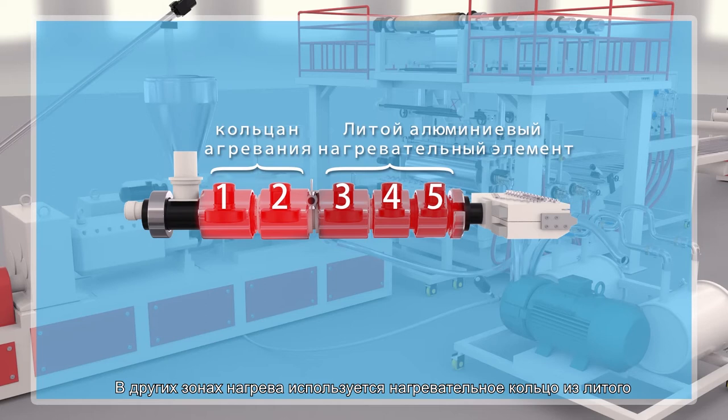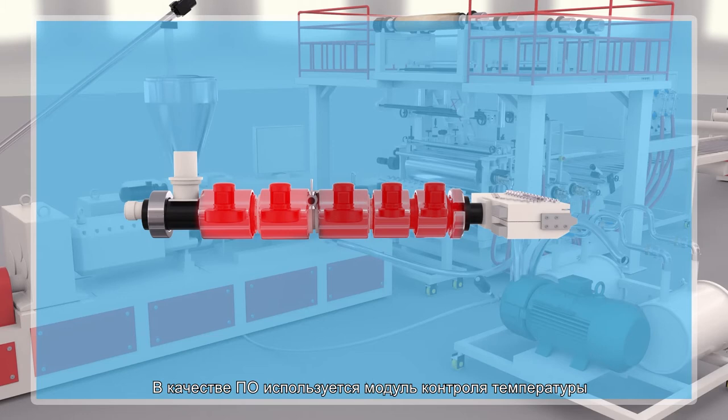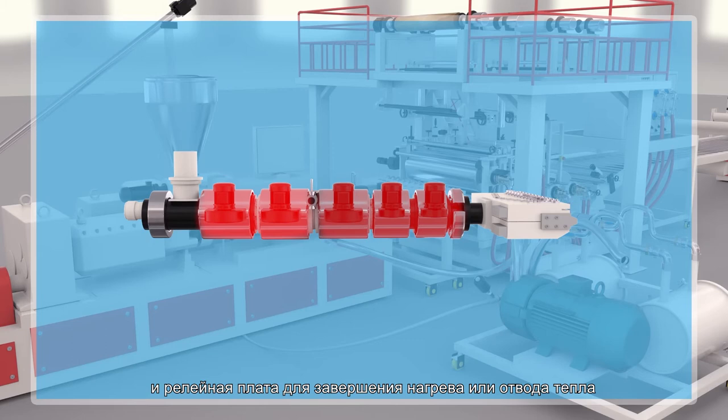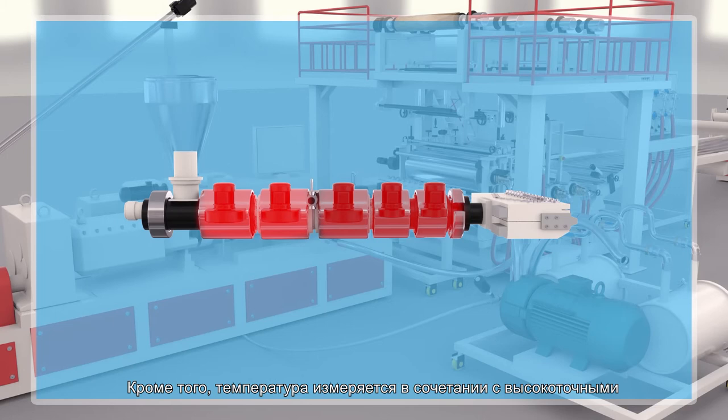Heating elements plus radiator fan is used to control the temperature. For software, temperature control module plus relay board is used to complete the heating or heat dissipation output, which combines with higher precision thermocouple for the temperature measurement.